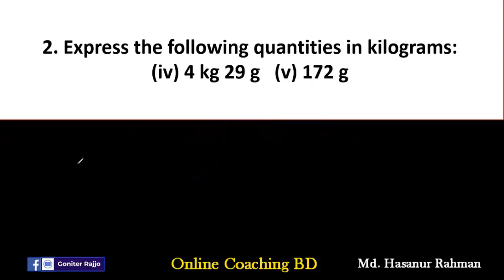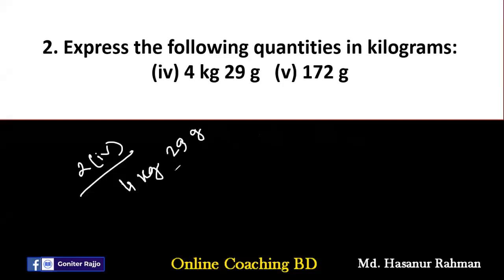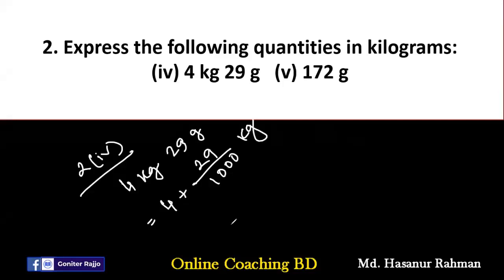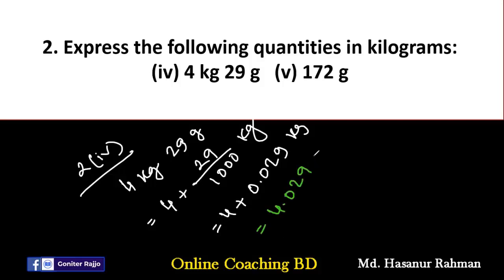Number four: four kilograms, twenty-nine grams. We divide twenty-nine by one thousand to convert grams to kilograms, giving 0.029. The final answer is four plus 0.029, which equals 4.029 kilograms.